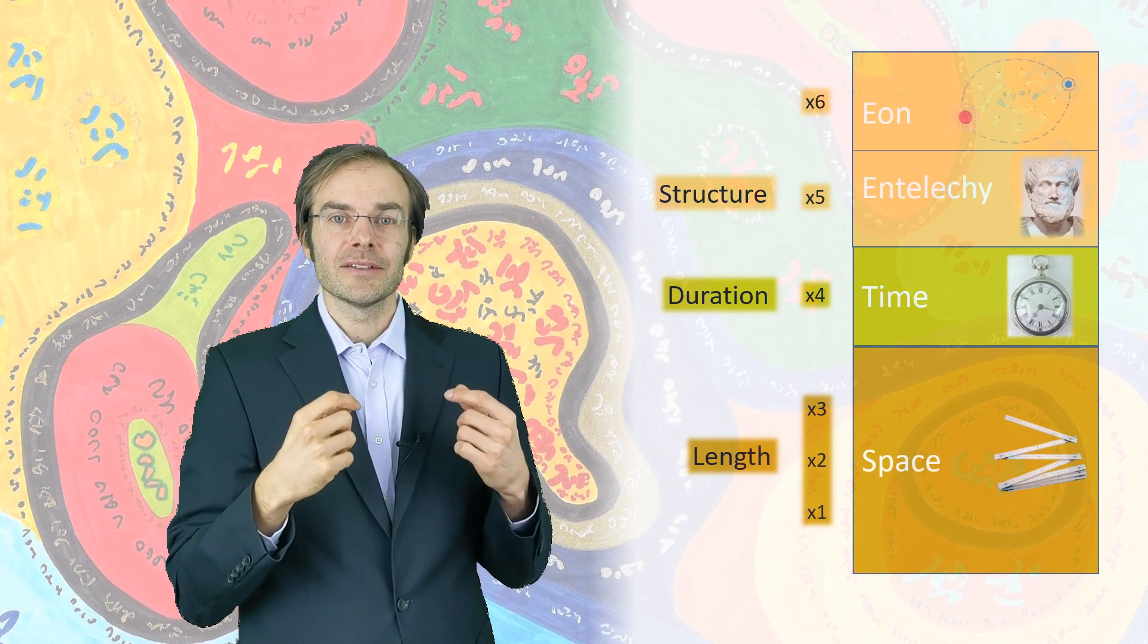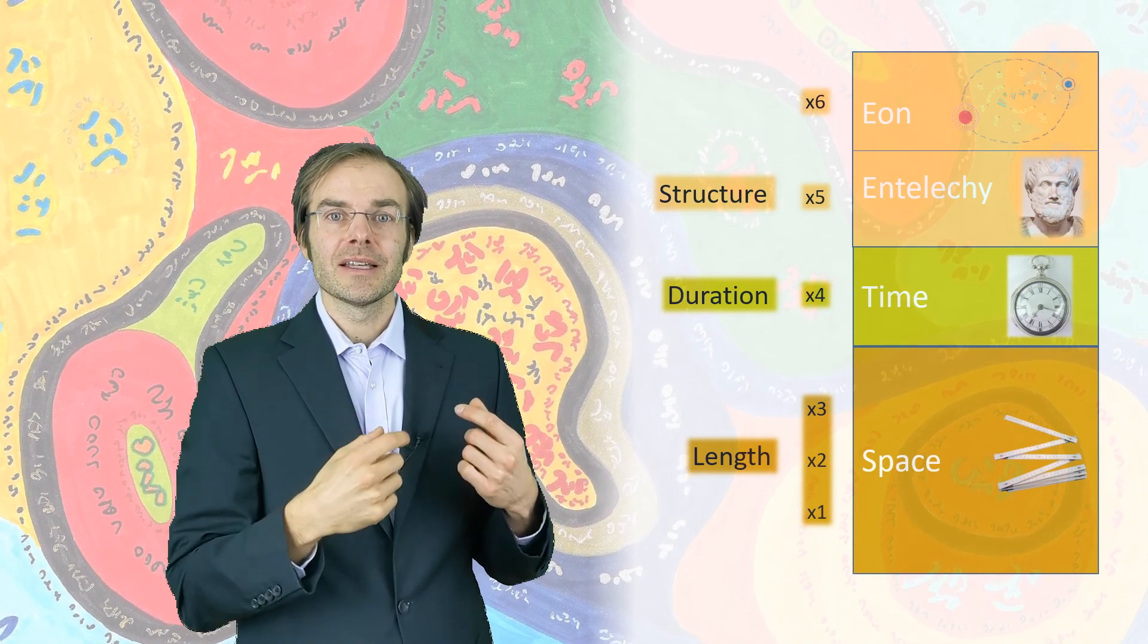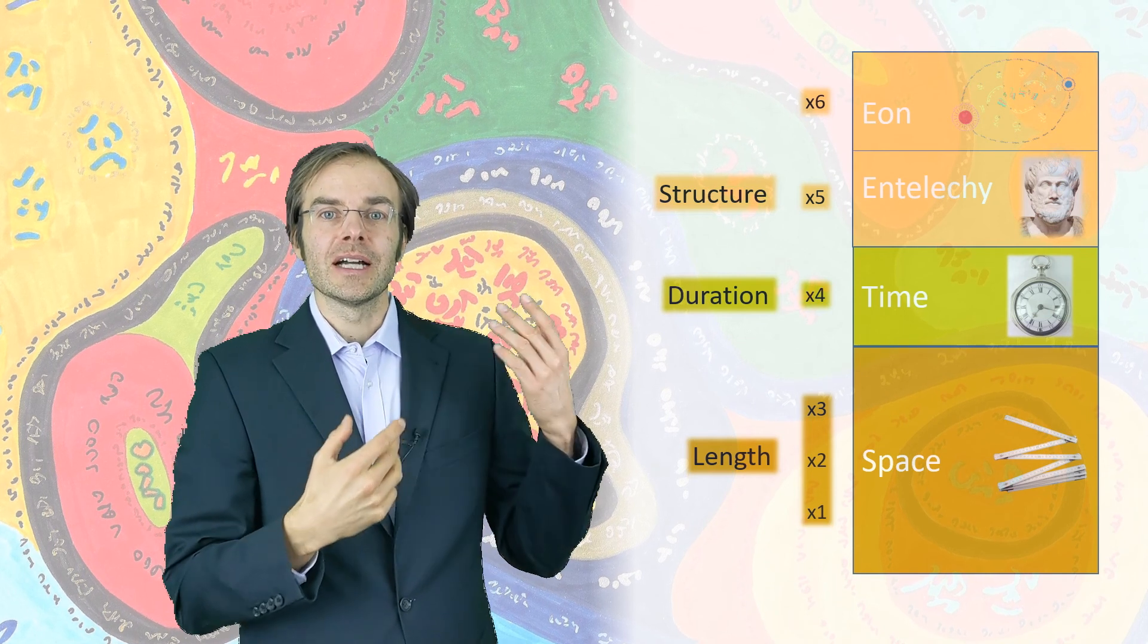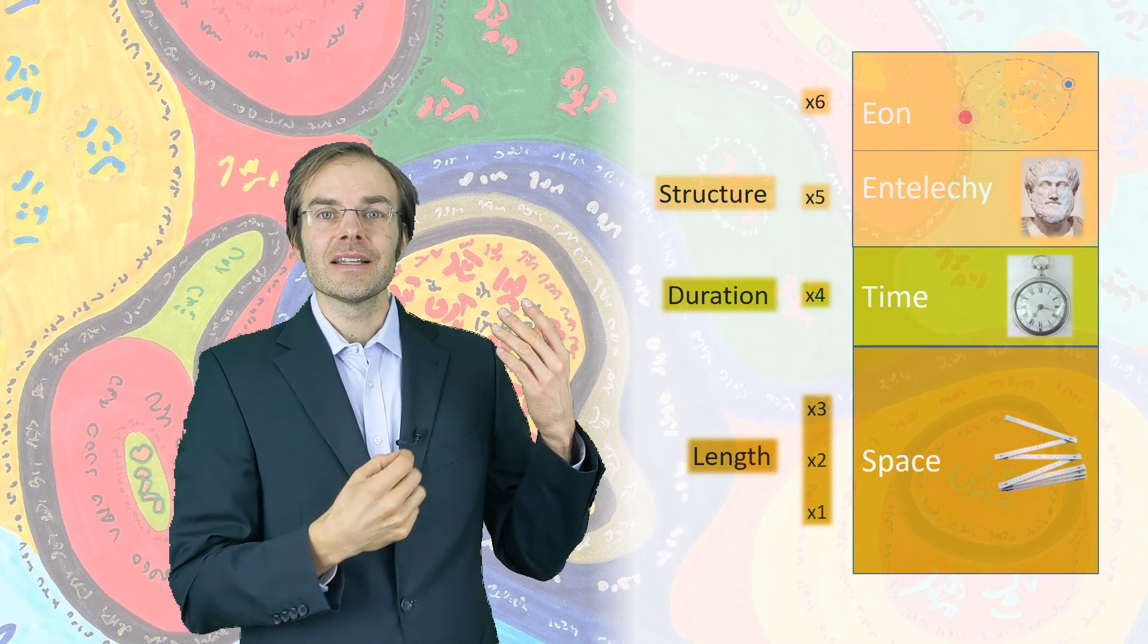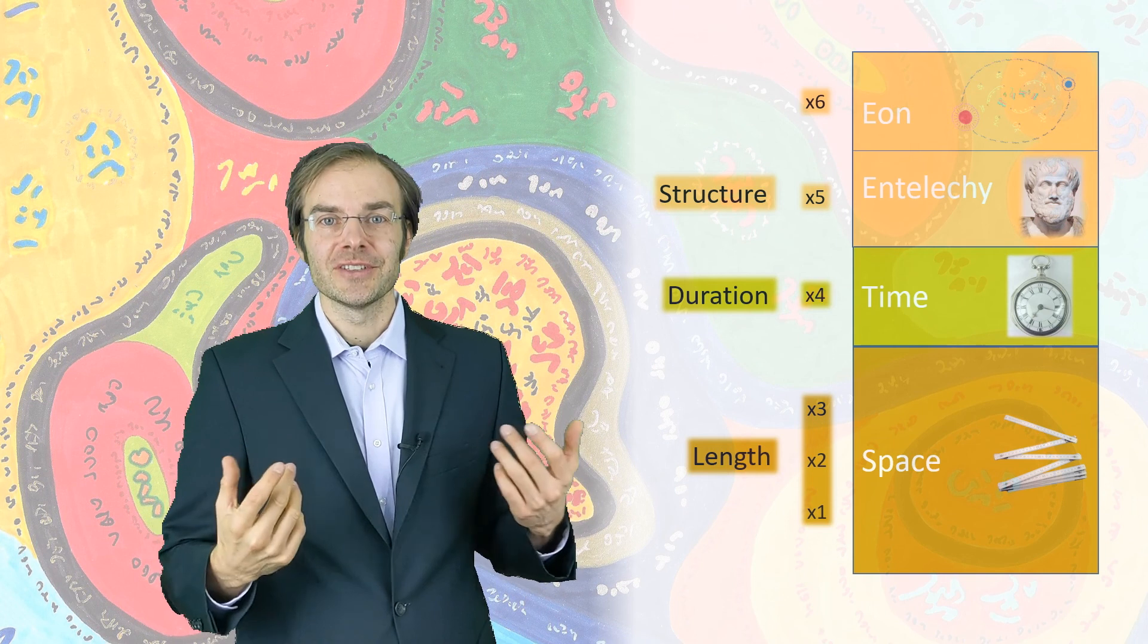And you can also imagine it as probability. The more organized the system is, the less likely it is to occur statistically.